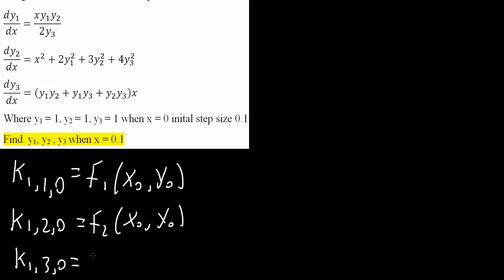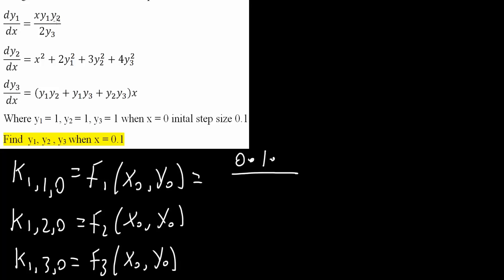Next we will have k1,3,0, which will equal f3(x0, y0). Now we need to insert values into our actual equations. For the first one, x is 0, so we put 0 in the equation: 0 times y1. The value of y1 when x equals 0 is 1, times y2 which is also 1, times 1, divided by 2 times y3. y3 is also 1, so this equals 0.